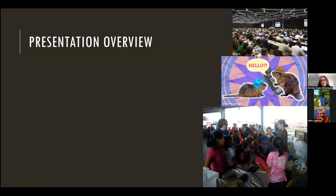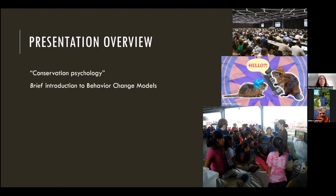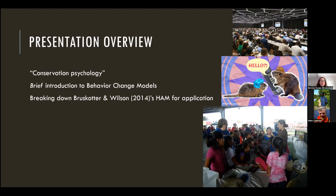It's going to be very generalized and we can target things based on your interests. I'll give an overview of conservation psychology, then a brief introduction to behavior change models — which could be an entire semester of material. Then I'll walk through one behavior change model, the hazard acceptance model for carnivores, and show how it applies to beaver tolerance outreach. We'll also walk through a grade-A example of beaver outreach that uses all the components of the model.